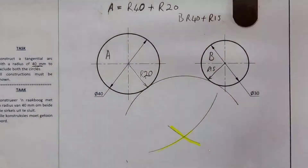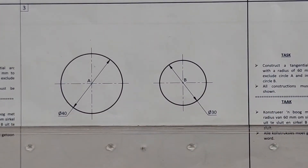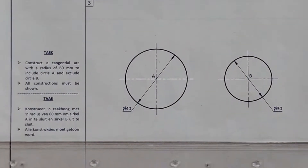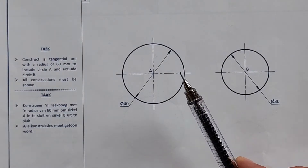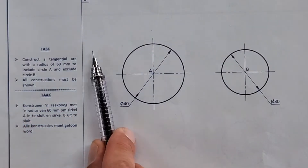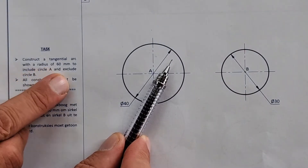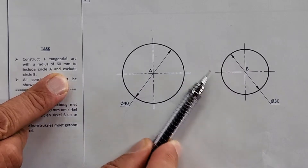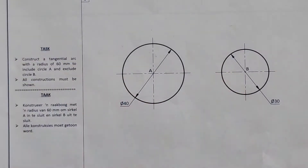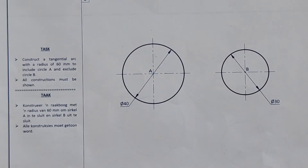Now the next one is going to blow your mind. Look at this - construct a tangential arc with a radius of 60 millimeters to include circle A and exclude circle B. One is inclusive, the other is exclusive at the same time. Is it even possible? What's the secret here?